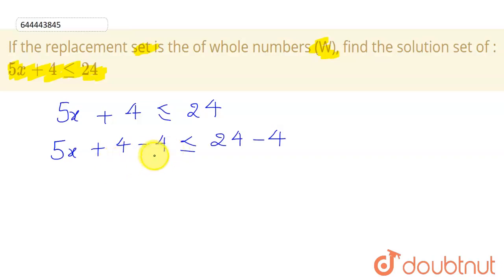Now see, this plus 4 minus 4 will cancel out each other. So I have remained with 5x. And 24 minus 4 will give me 20.